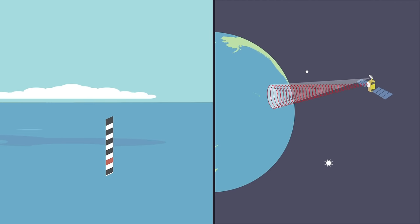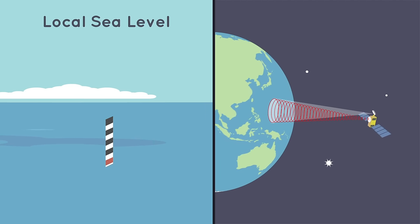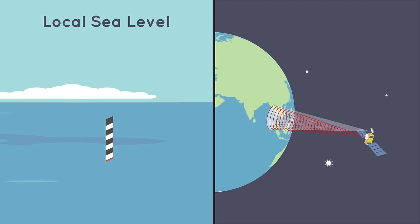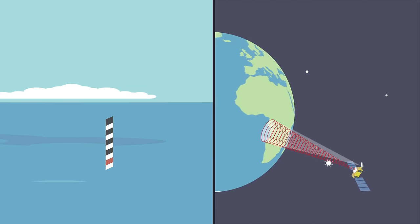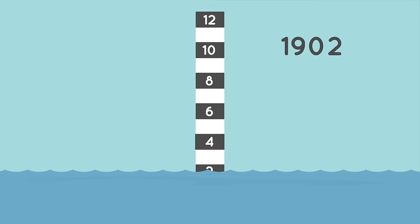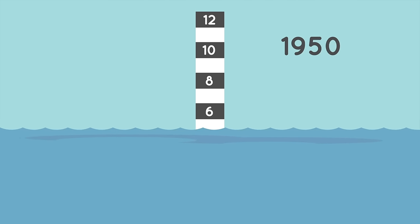People have been measuring local sea level at certain locations along the coast for hundreds of years. And NASA has been measuring the global sea level for almost three decades. Over this time, scientists have observed that the global sea level has been rising.